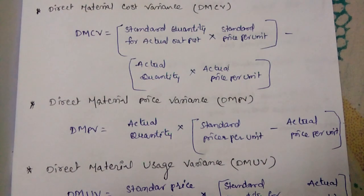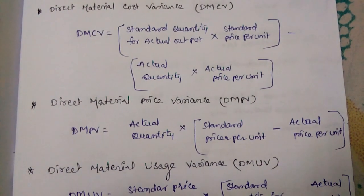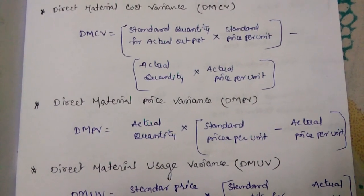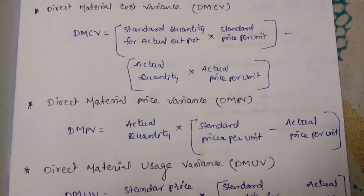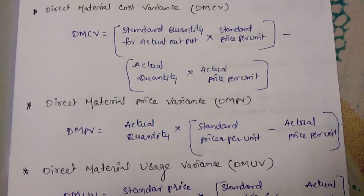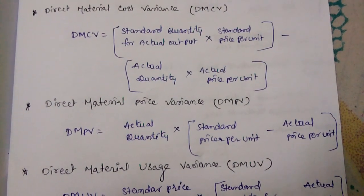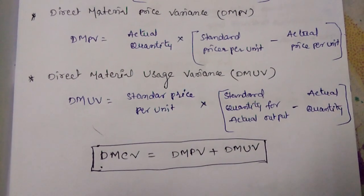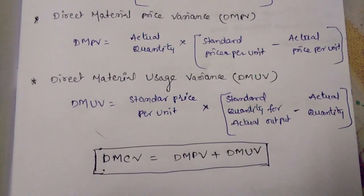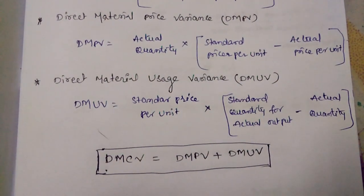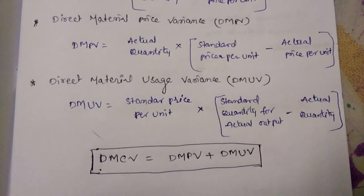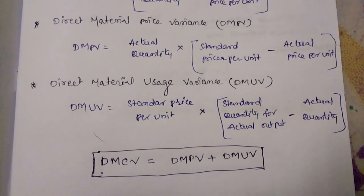Next is Direct Material Price Variance, called DMPV. DMPV equals standard price per unit minus actual price per unit, multiplied by actual quantity. Then, Direct Material Usage Variance (DMUV) equals standard price per unit multiplied by the difference between standard quantity for actual output and actual quantity.